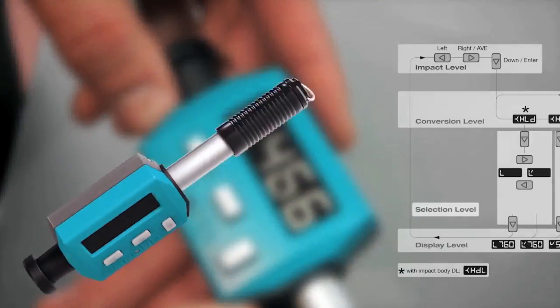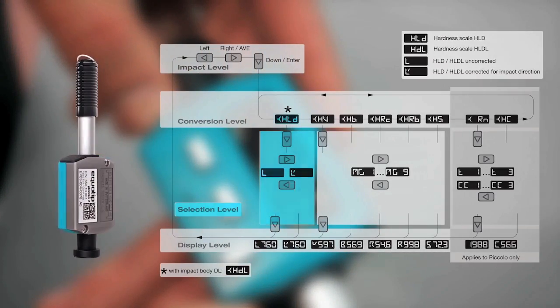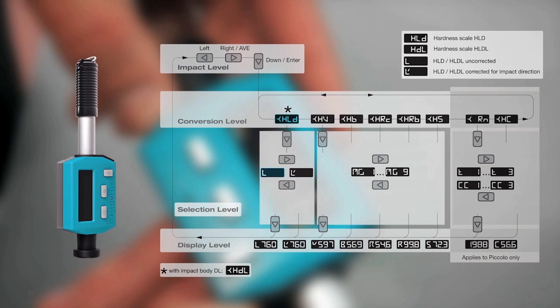If you choose Lieb, you can select L, which allows you to use the original uncorrected Lieb value. Otherwise, the value is always corrected for impact direction. Most measurements with the Ecotip Piccolo are performed in the average mode. This means that a series of impacts is performed and the instrument displays the average value of these impacts when completed.